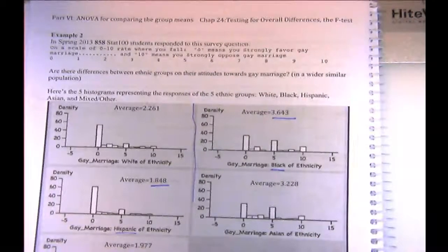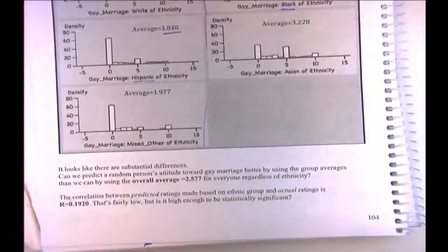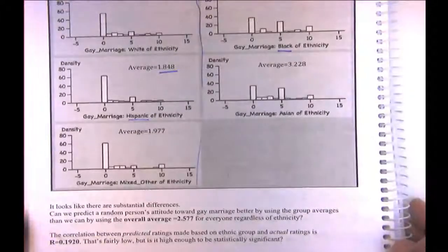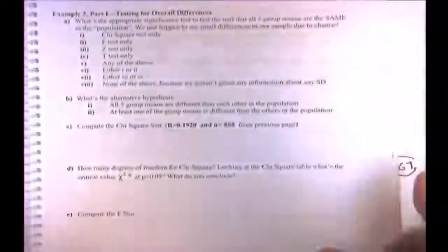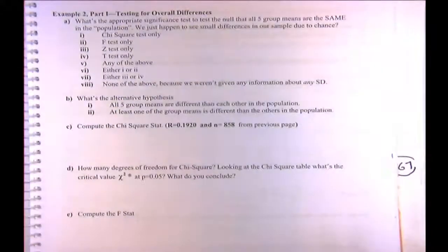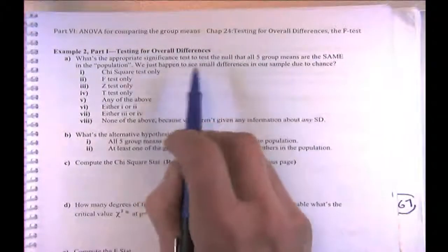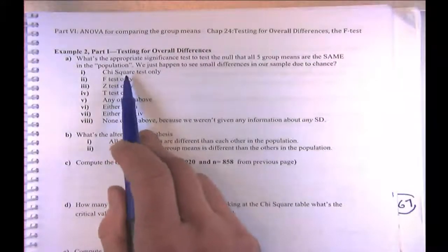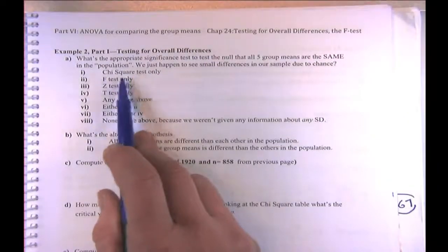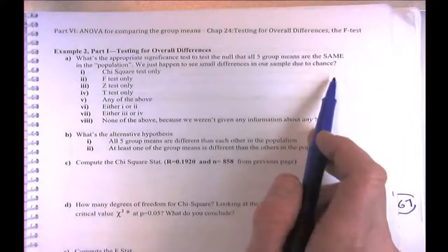Please ask questions like that — those basic questions are always the most helpful. If you don't understand basically what's happening here, it's hard to really understand it. Now we're on the next page, page 105. The question is: what's the appropriate significance test to test the null that all five group means are the same in this imaginary population?